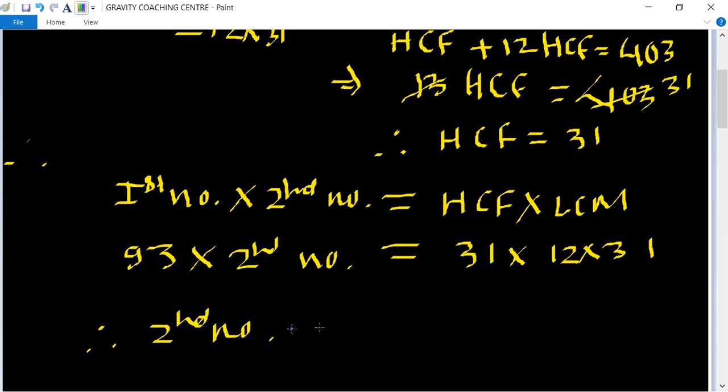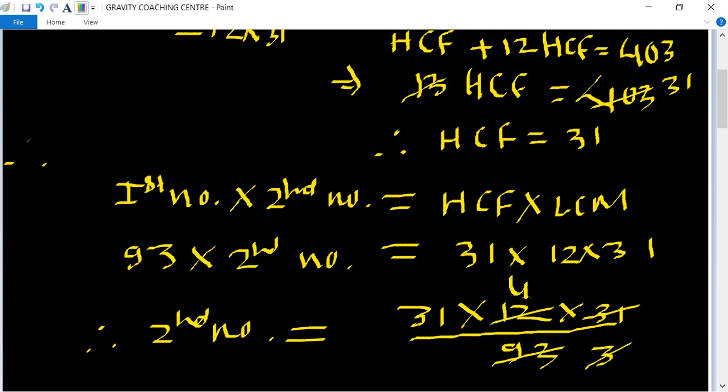31 cancels with 93, and 3 goes into 12 four times. So 31 into 4 equals 124.